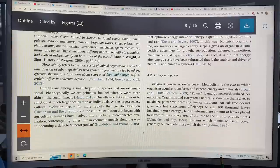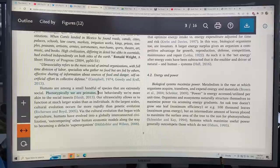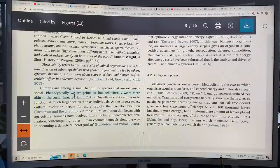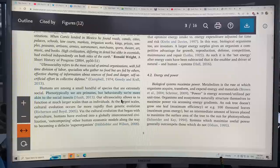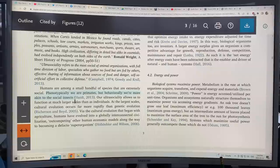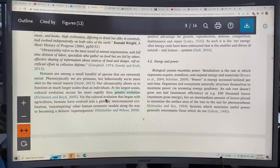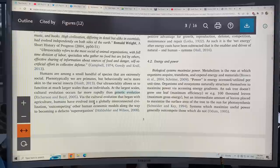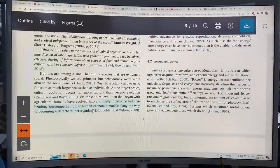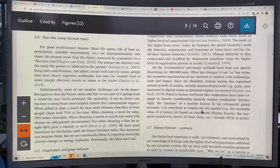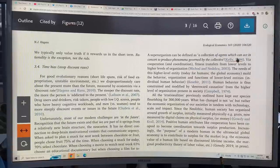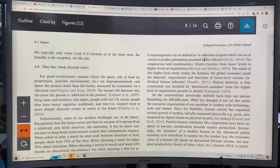We're primates, but behaviorally, we're more like ants, the social insects, or bees. Our ultra-social behavior allows us to function at much larger scales. And as individuals, at the largest scales, cultural evolution occurs far more rapidly than genetic evolution. With the cultural evolution that began with agriculture, we evolved into a globally interconnected civilization, out-competing other human economic models along the way to become a de facto superorganism.